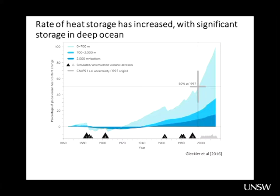This is a series of simulations using the CMIP-5 results showing changes in ocean heat content from 1860 to the present. About half of the ocean heat content increase occurred by about 1997, with the other half since then. The light blue is the upper ocean in simulations, the dark blue is 700 to 2,000 metres, and the deepest colour represents 2,000 metres to the bottom — all increasing and increasing more rapidly through the period.